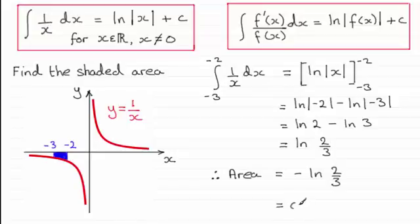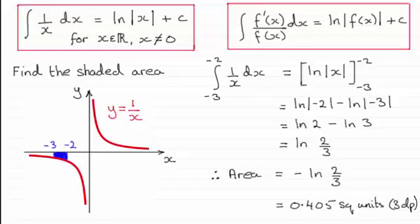If you work it out on your calculator, it turns out to be 0.405 square units, rounded to three decimal places. Thanks for watching, and hopefully you've got an idea now of how we would use the modulus sign, especially in an example like this.